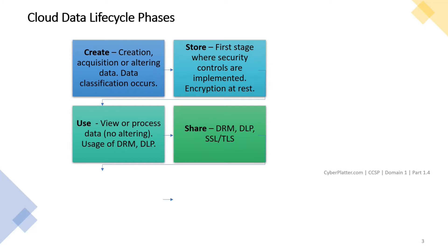The next phase is share, where data is available for use by others such as customers, partners, employees, vendors, etc. Here the data is sent across various public and private networks and locations. We should consider encrypting files and communications. For encryption, we can use SSL or TLS for encryption in transit. Data loss prevention and information rights management can also be considered here. The sharing location should be restricted based on jurisdiction in accordance with regulatory mandates.